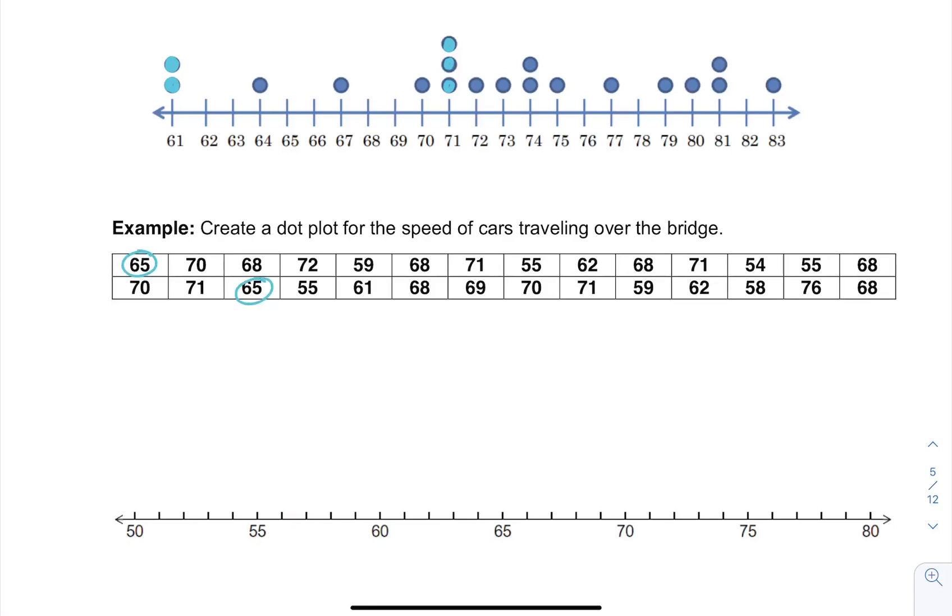Then for 70 we have one, two, three times we see that, so we can put three times. You can basically do this in whatever order. Then we have one, two, three, four, so four seventy-ones.